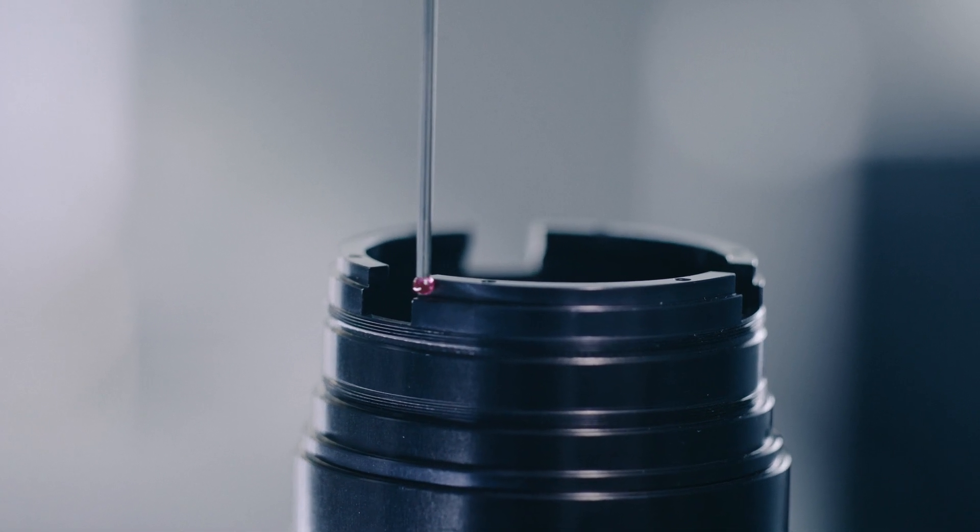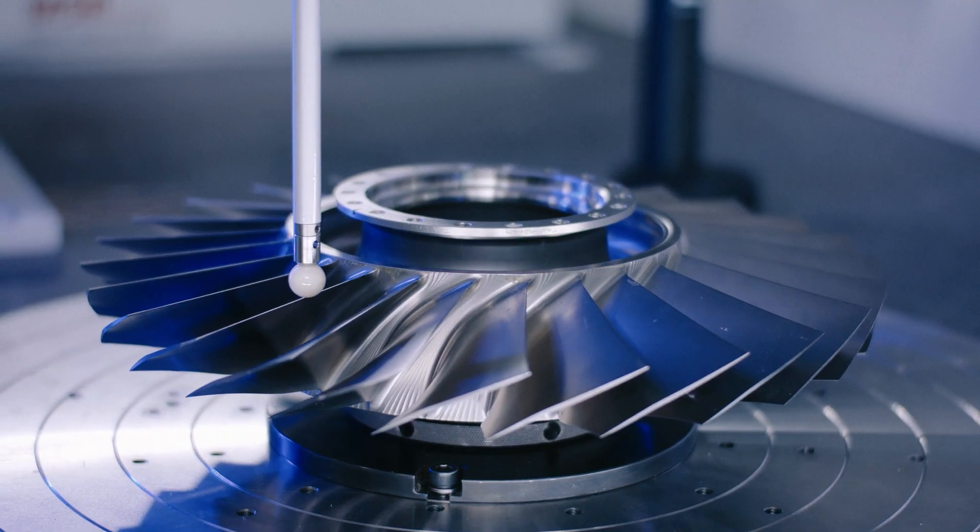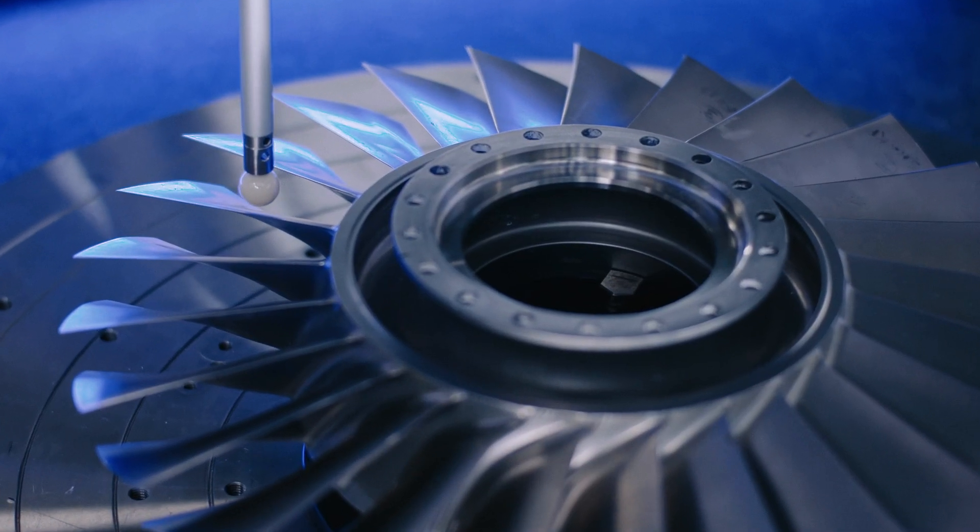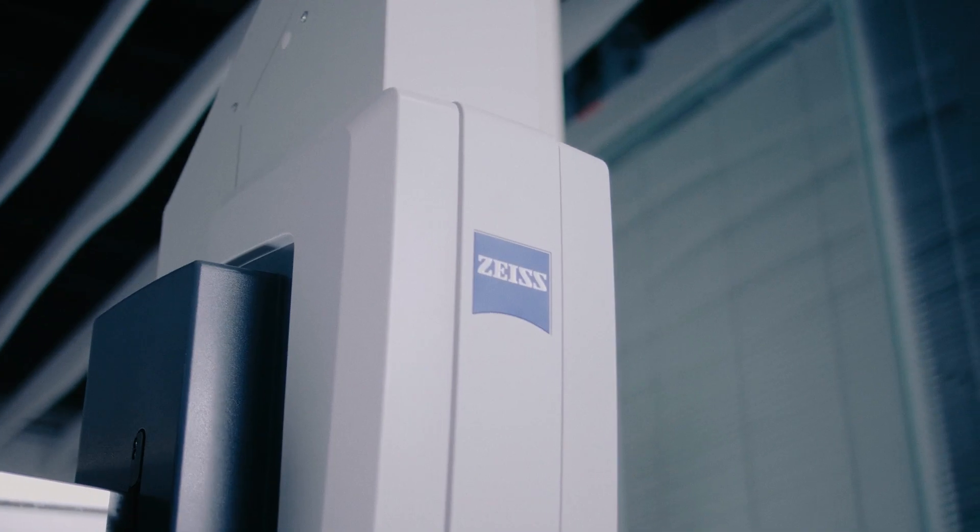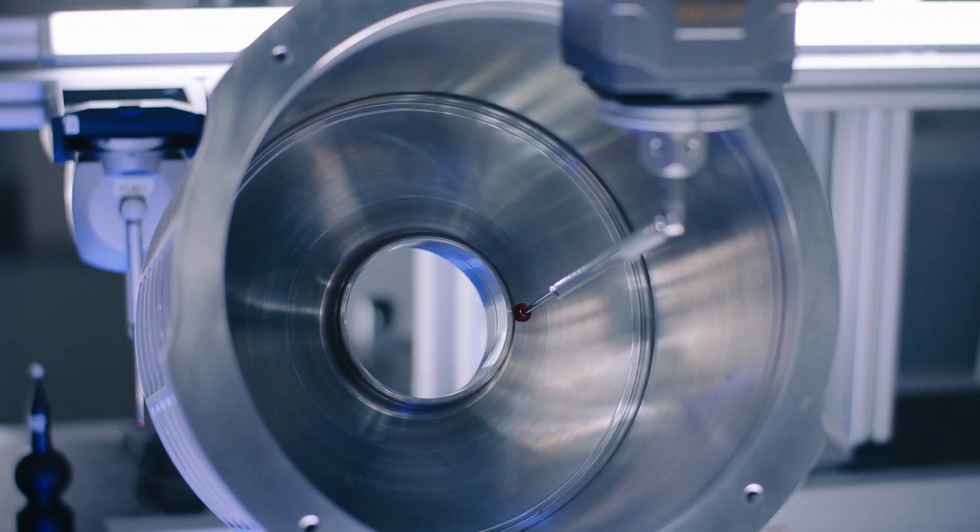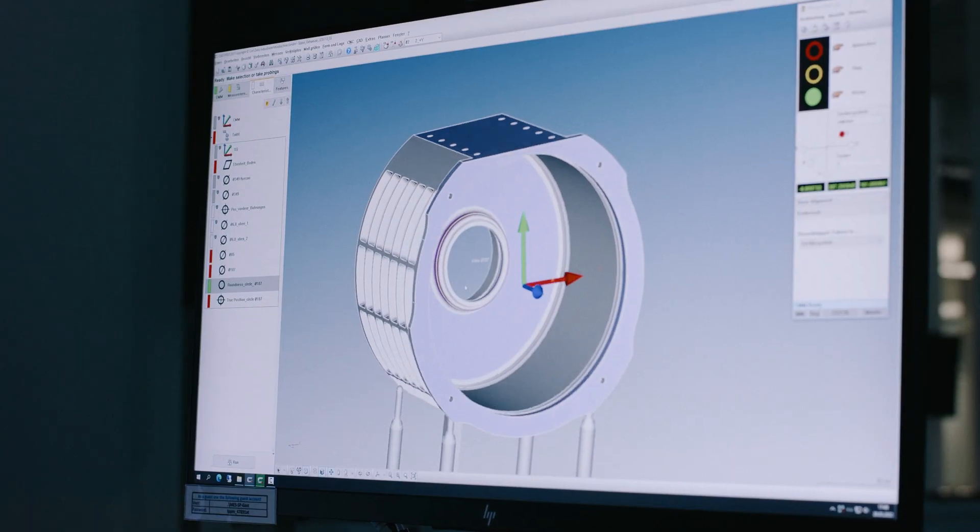Including FlyScan technology. FlyScan allows you to scan over interrupted contours without losing speed or accuracy. This saves time in the entire process: preparing, programming and scanning itself.